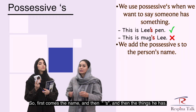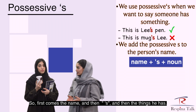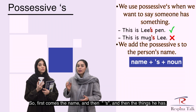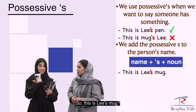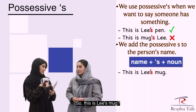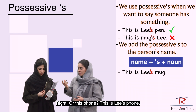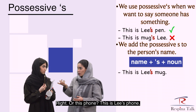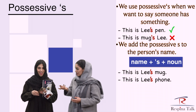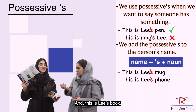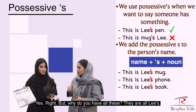We add the possessive S to the person's name. So, first comes the name, and then apostrophe S, and then the thing that he has. Yes. So, this is Lee's mug. Or this phone — this is Lee's phone. And this is Lee's book.